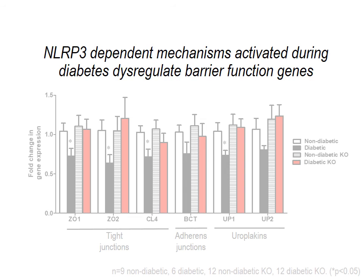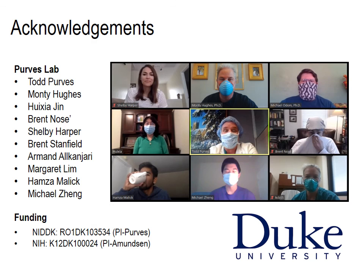Therefore, we conclude that NLRP3-dependent mechanisms activated during diabetes dysregulate barrier function genes. Our current and future studies involve assessing barrier function using in vivo as well as in vitro models. I'll be happy to take any questions that you might have.